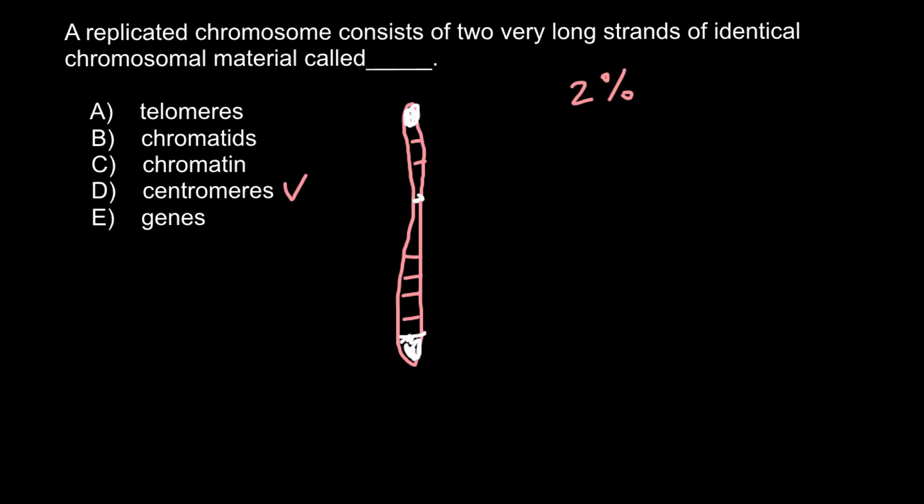When telomeres become very short, this triggers a mechanism of apoptosis, in other words, programmed cell death. You also have to remember that genes consist of sequences that code for proteins and sequences that don't code for proteins.